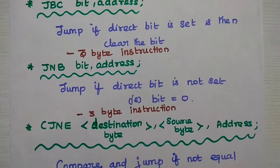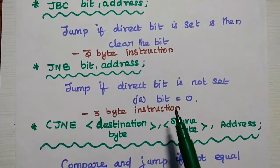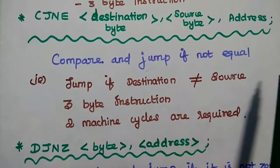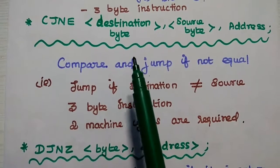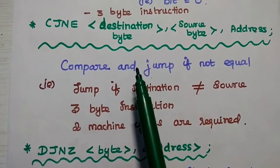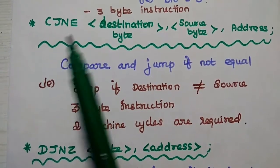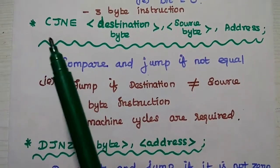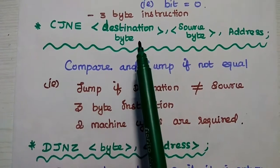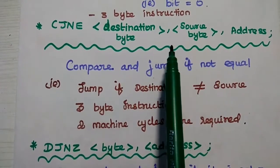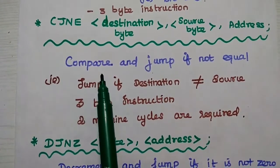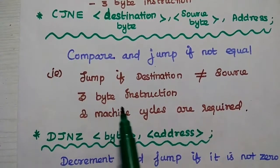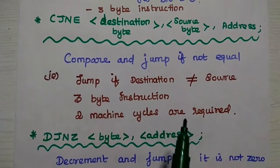JNB means jump if the direct bit is not set, i.e., the bit equals 0. The next important instruction is CJNE, destination byte, source byte, address — compare and jump if not equal. This is a very widely used conditional jump in the 8051 microcontroller. We compare the destination byte and the source byte; if both are not equal, transfer control to the given address. It is a 3-byte instruction requiring two machine cycles.